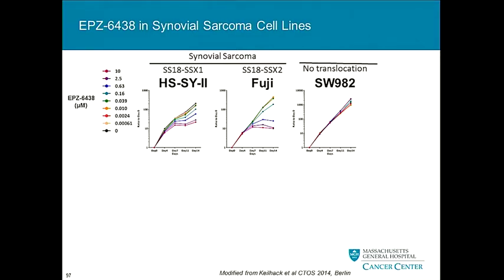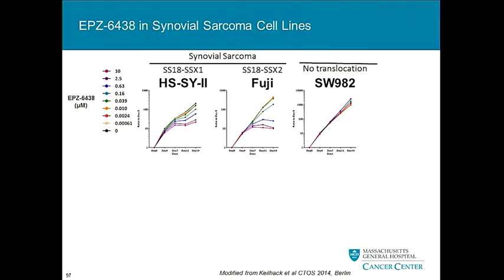Moving to the clinical compound — Epizyme has been doing some of these studies themselves. They have the Fuji line and see similar sensitivity, which is encouraging. The SY2 cell line appears to be resistant through unknown mechanisms. About 4% or less of synovial sarcomas can have mutations in things like HRAS, making us wonder whether a secondary acquired mutation is overriding the epigenetic phenomenon. SW982, labeled in ATCC as a synovial sarcoma cell line, does not have the translocation — we actually think it may be a liposarcoma.